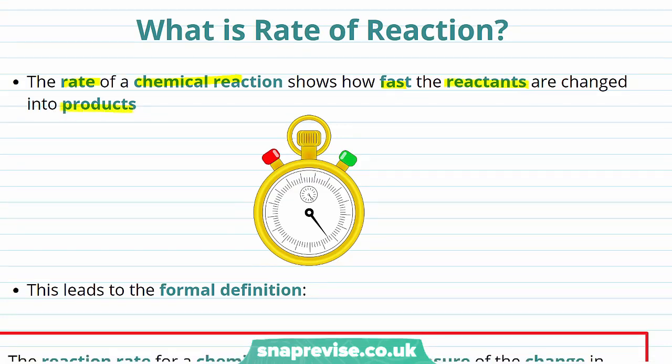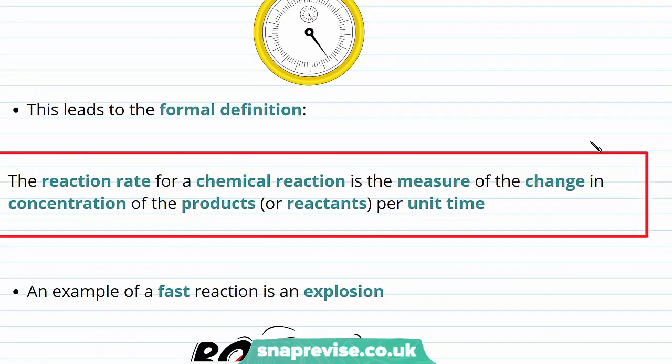Therefore, the rate of reaction just lets you know how fast or slow the chemical reaction happens. We can define this formally as the reaction rate of a chemical reaction is a measure of the change in concentration of the products or reactants per unit time.